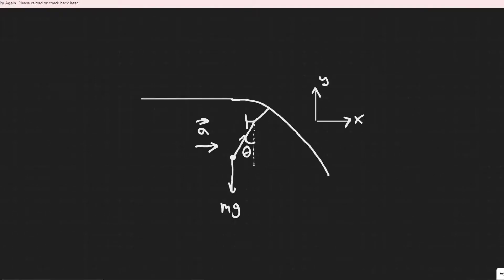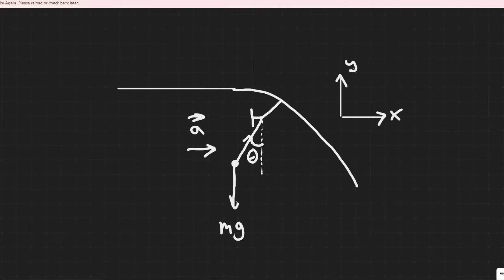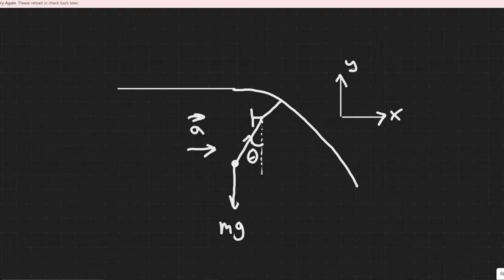In this problem, you're told an object is hanging by a string from your rear view mirror while you are accelerating at a constant rate from rest to 28 meters per second in six seconds. What angle theta does the string make with the vertical? Imagine this is your car with your rear view mirror. Initially the object hangs straight down, but when we accelerate the car, it flies backwards and makes some angle theta — that's what we're trying to find.